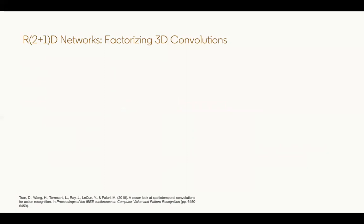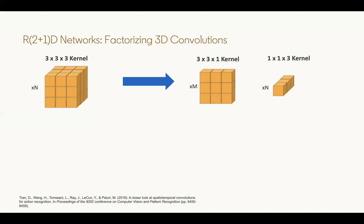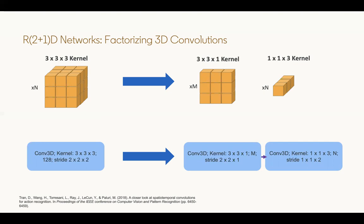The R2 plus 1D networks introduce a factorizing approach to take a 3D convolutional layer and break it into two different layers by reducing the kernels into 2D and 1D. In terms of the architecture, this introduces two layers in succession. The M intermediate channels, as shown, are a hyperparameter that can be tuned. The authors set this so that the number of parameters after you do this factorizing is roughly equivalent to before you do the factorizing. So it's just a way to break down a single 3D conv layer into two different 3D conv layers that are less expensive and can be considered as just 2D convolution and 1D convolution along the temporal dimension.